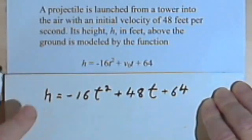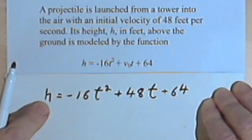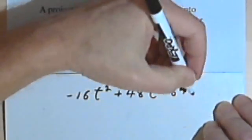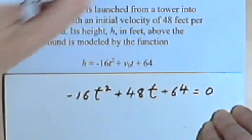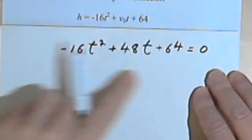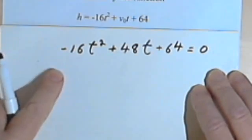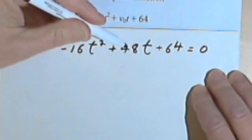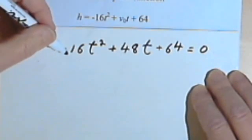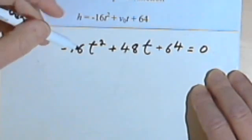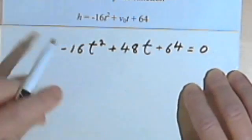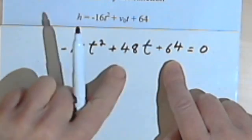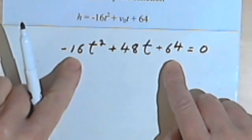So I'm going to take this original equation and I'm just going to set it equal to zero. So what do we have here? It's just a quadratic equation that we can solve. Now, looking at it, we've got these big numbers, 16 and 48 and 64. So you might want to try the quadratic formula. But let's take a look at the numbers. They're all even. So I could divide out a 2 from this whole thing. In fact, I could divide out a 4.